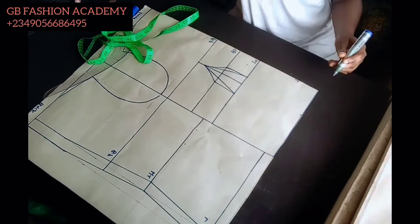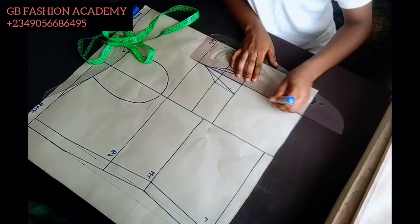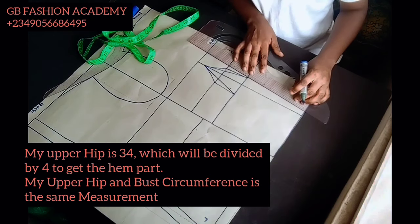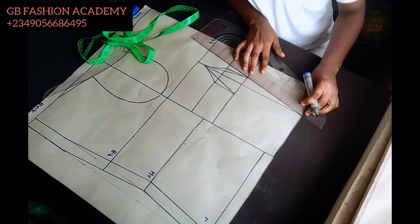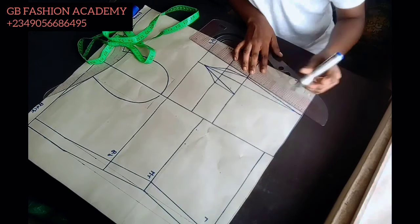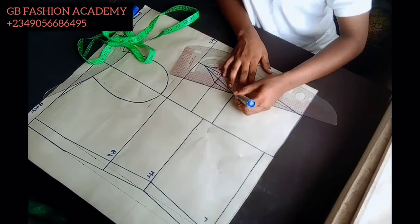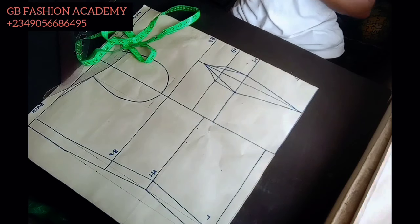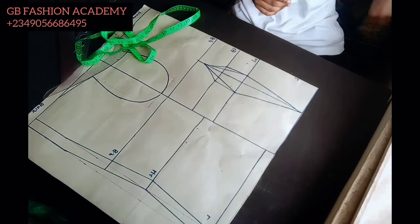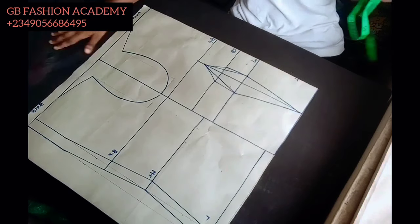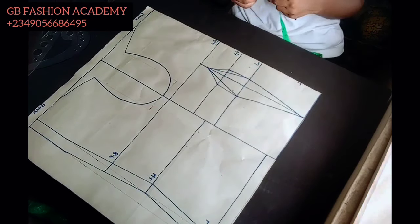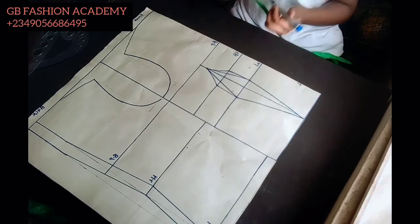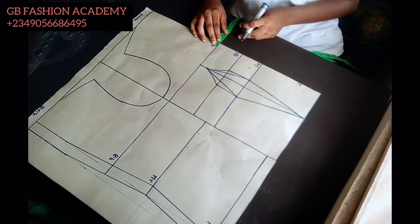On the hem part I have my upper hip circumference. My upper hip circumference is 32 inches divided by 2, divided by 4, giving 8.5. That is the same width as my bust circumference, which is why there is a straight line from the armhole down to the hem. You want to go ahead and connect your dart like this.